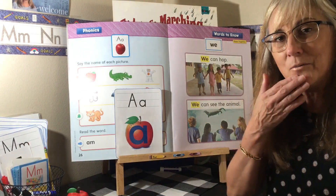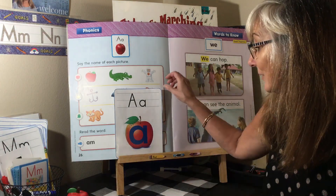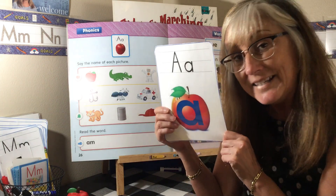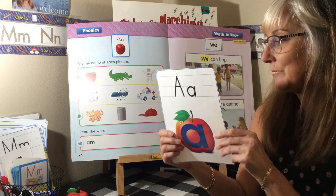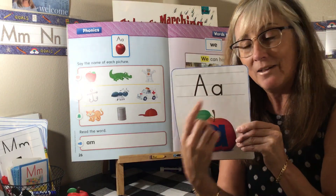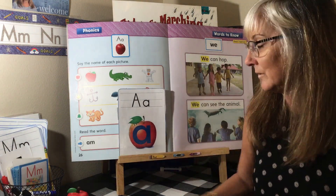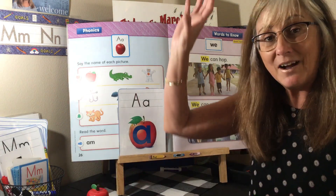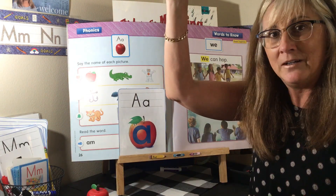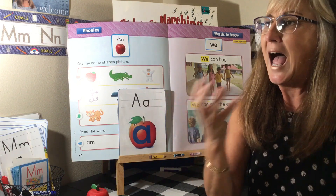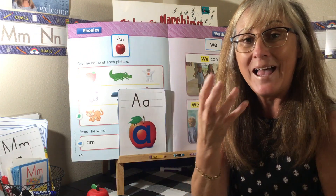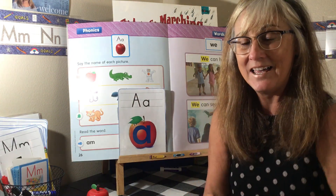Hello boys and girls, welcome! We have a lot to learn today, so we are going to be starting our new alpha friend, which is Andy Apple — letter A. There's a big A and a little a. When we do Andy Apple, we reach up into the sky, into a tree, to pull out an apple, and we take a bite.